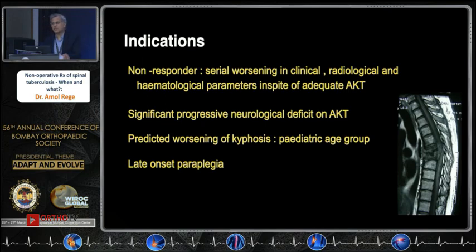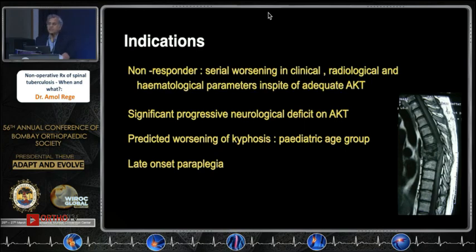So what are those indications? The first indication is non-responding — serial worsening in clinical, radiological, and hematological parameters despite adequate AKT. The patient should be compliant, should take at least 3 to 4 months of AKT, and the AKT should be prescribed as per body weight, not just the standard dose. Second, significant progressive neurological deficit on AKT. Third, predicted worsening of kyphosis or instability. Fourth, late onset paraplegia. These are the four indications for surgery — the only times when you should touch the patient with a knife.